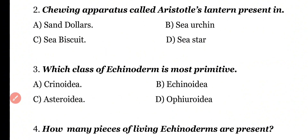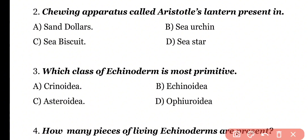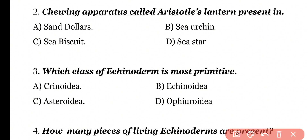Question 2: Chewing apparatus called Aristotle's Lantern is present in Sand Dollars, Sea Urchin, Sea Biscuit, or Sea Star? Correct answer is Option B. The masticating apparatus Aristotle's Lantern is present in the mouth of the Sea Urchin.